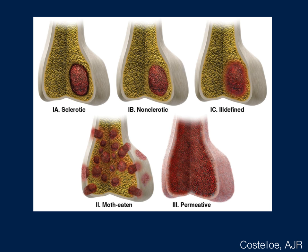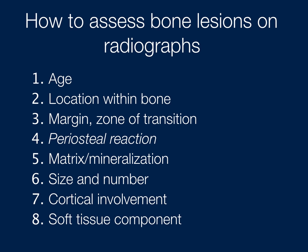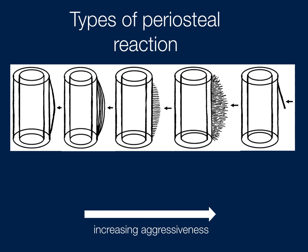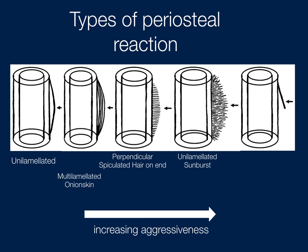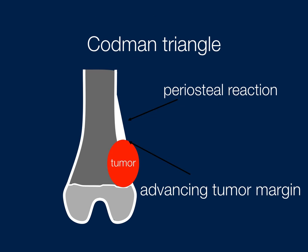Another diagram shows the sclerotic well-defined lesion in the upper left and the most aggressive permeative appearance in the lower right. After margin and zone of transition, you move on to periosteal reaction — how the bone is reacting. From left to right, increasing aggressiveness: unilamellated and well-defined, then onion skin with multiple layers, then perpendicular spiculated otherwise known as hair-on-end, then sunburst appearance, and finally the most aggressive — the elevated Codman triangle, where the lesion actually elevates the cortex.